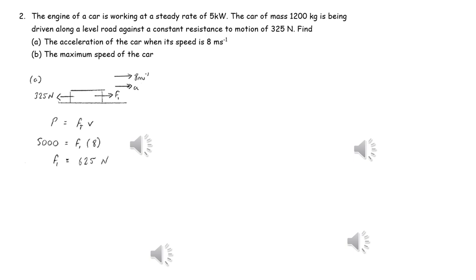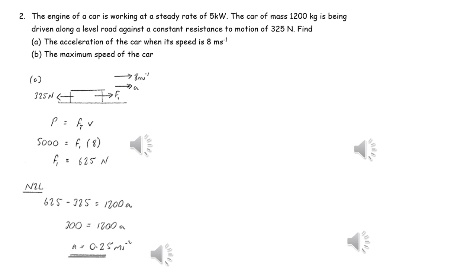To find the acceleration, we need to know the tractive force initially. Therefore, we can use power equals tractive force times velocity to evaluate the tractive force. We can then apply Newton's second law, so the resultant force acting in the direction of the acceleration equals ma, and therefore we can find the acceleration.